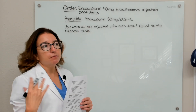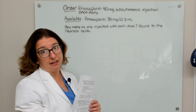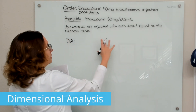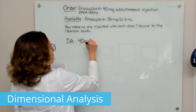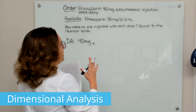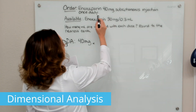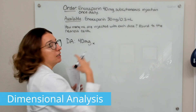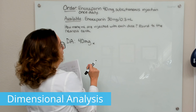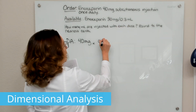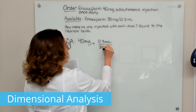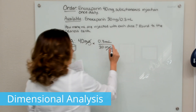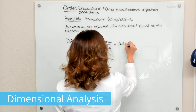We can solve this problem using dimensional analysis, ratio and proportion, or the formula method. Let's start with dimensional analysis. When I set up my equation, I start with what is ordered — 40 milligrams. I check to see if I need to convert any units of measure. My ordered dose is in milligrams and what I have available is also in milligrams, so I don't need a conversion factor. Now I multiply by the available concentration, putting milliliters on top and milligrams on bottom so the milligrams will cross off and I'm left with milliliters.